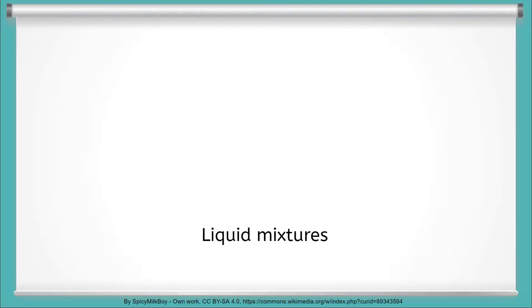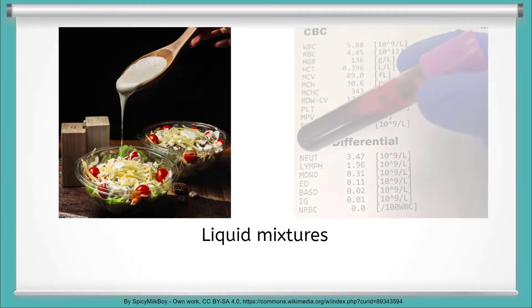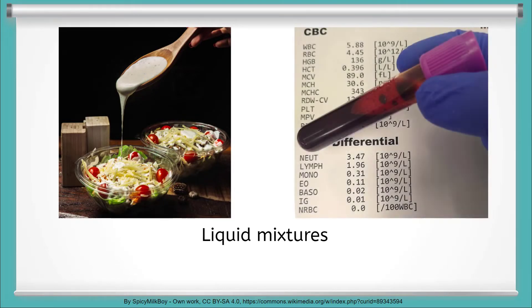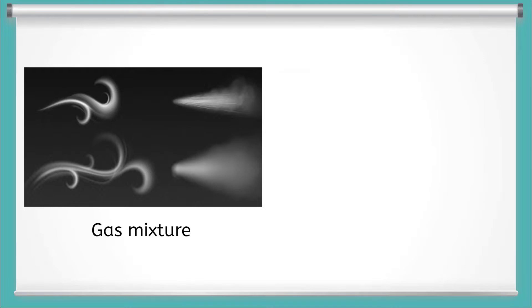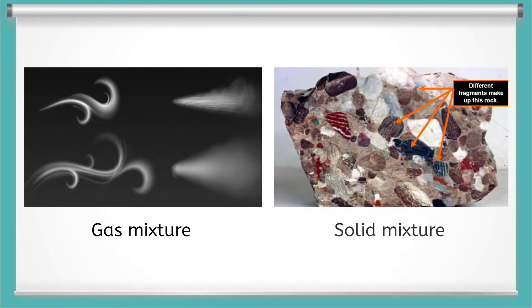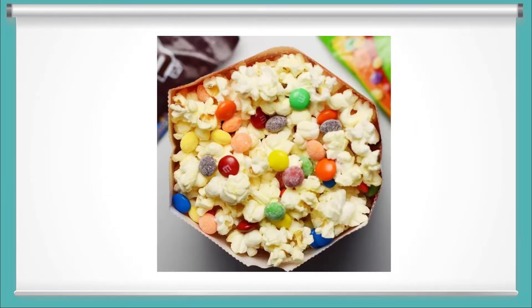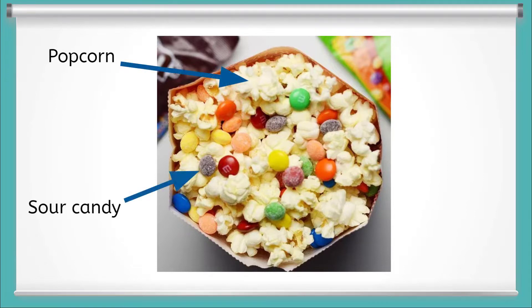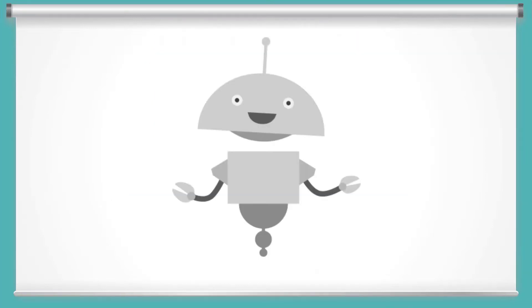Other examples of liquid mixtures include salad dressing and even the blood in our bodies. Air is a mixture of gas, mainly nitrogen and oxygen, and this rock is a solid mixture. For example, imagine it's family movie night and you're in charge of making the snacks. You mix popcorn, sour candies, and chocolates in a bowl. The individual components — popcorn, sour candies, and chocolates — can be easily separated, and each component of the mixture doesn't change. You did a great job classifying matter.